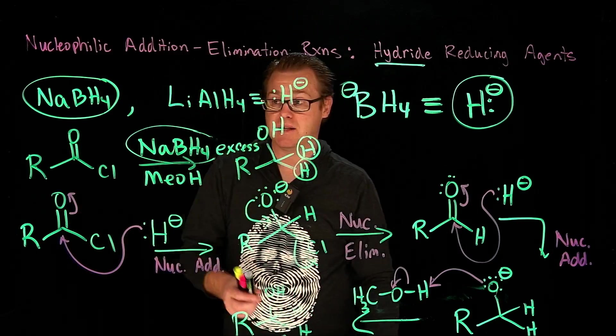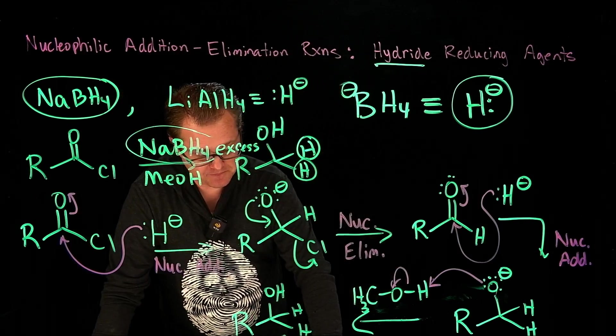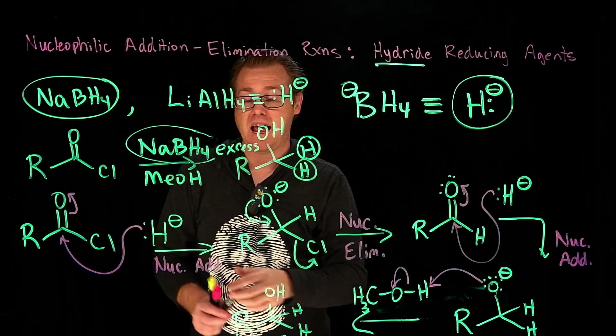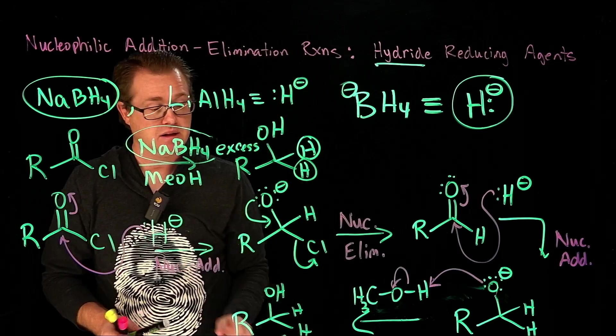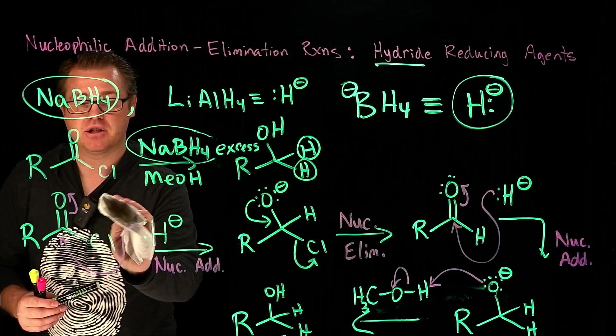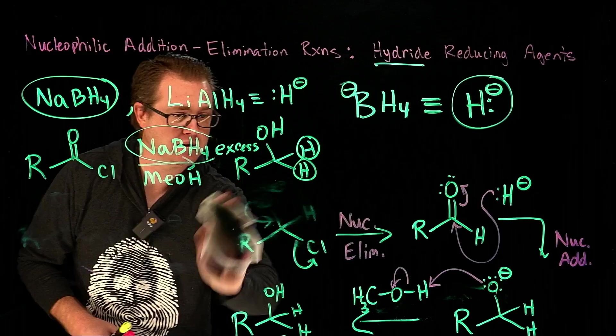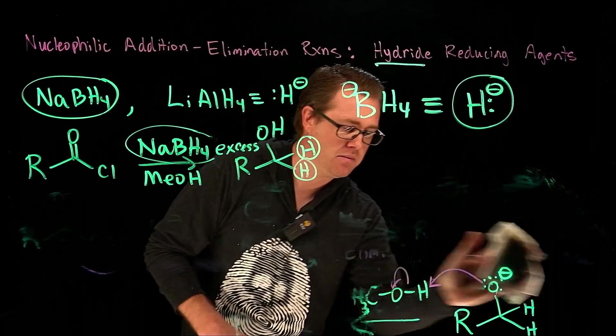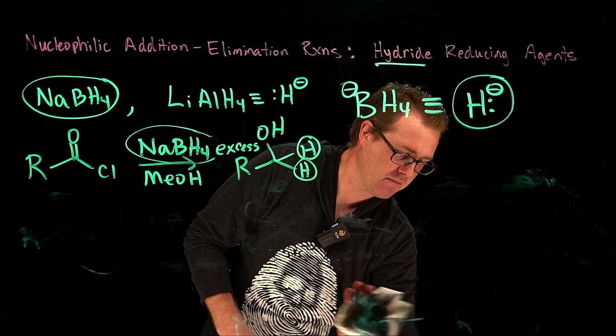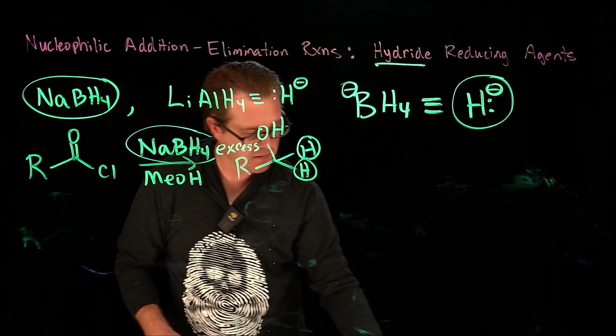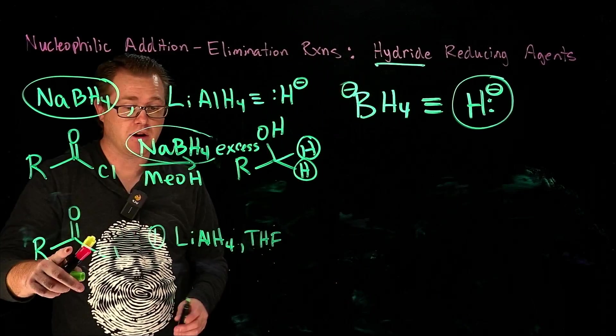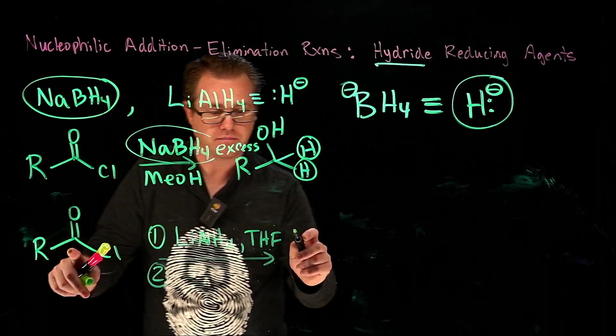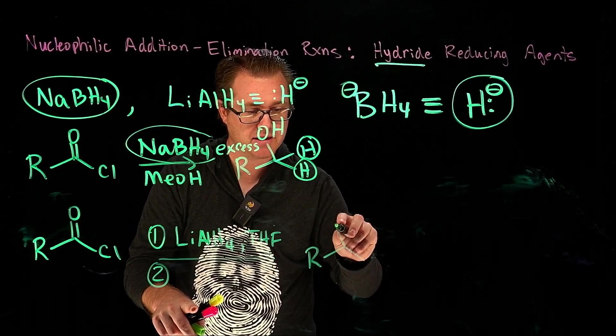But the difference, though, with lithium aluminum hydride is that this reagent cannot be placed in a polar protic solvent. So let's draw it out so you can see the difference here. So if we take the same starting material, but now we're going to use a different reducing agent, you see the difference here?